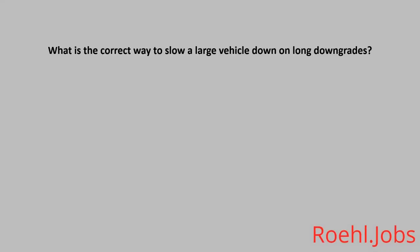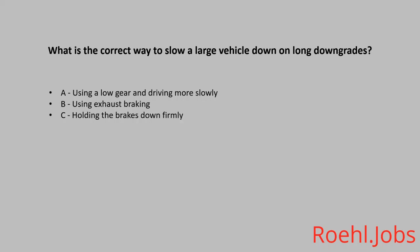What is the correct way to slow a large vehicle down on long downgrades? A. Using a low gear and driving more slowly. B. Using exhaust braking. C. Holding the brakes down firmly. D. Controlled braking. The answer: A, using a low gear and driving more slowly.